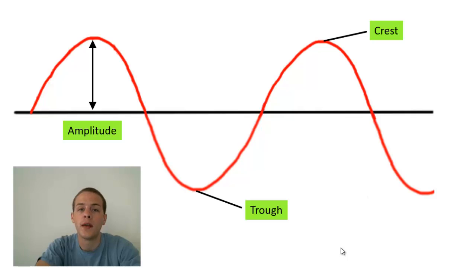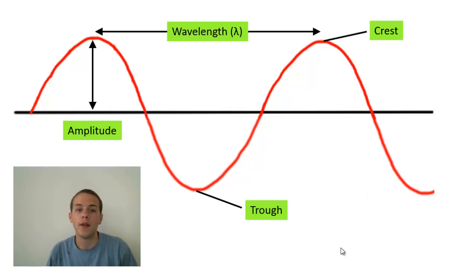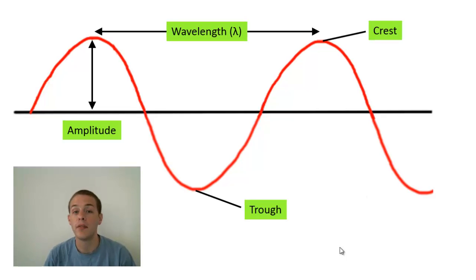Another property of waves is what we call the wavelength, which is the distance between two adjacent crests or two adjacent troughs. And wavelength has the symbol lambda. So that weird looking symbol, that's a Greek symbol, that's a lambda. And both wavelength and amplitude are going to be measured in units of distance. So meters, centimeters, nanometers, just the appropriate unit of length.